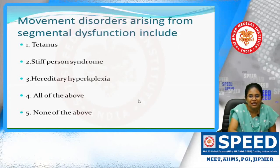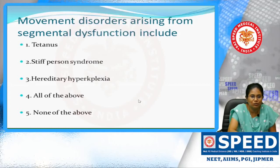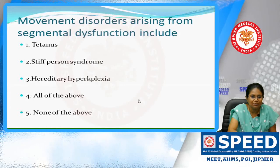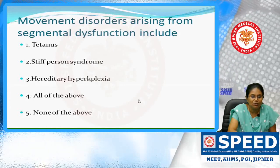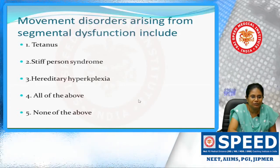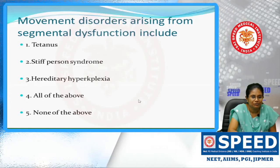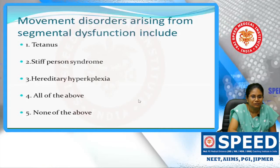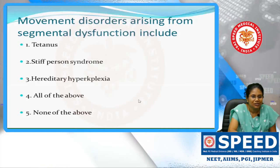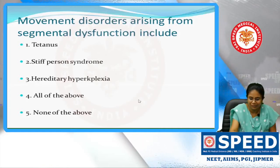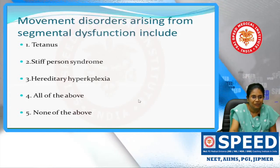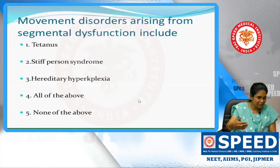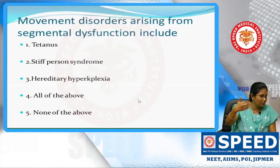Movement disorders arising from segmental dysfunction include tetanus, stiff person syndrome, hereditary hyperekplexia — and the answer is all of the above. These represent segmental control disorders, which will be discussed further.